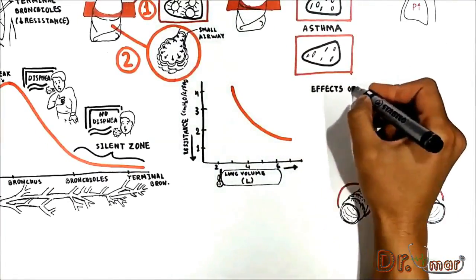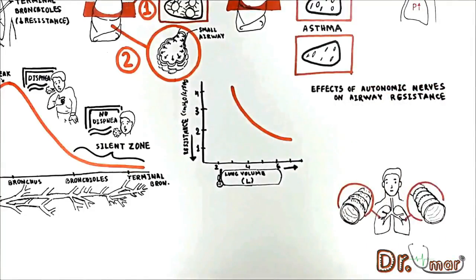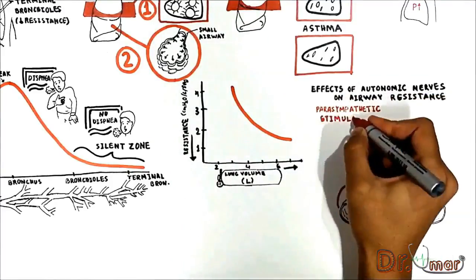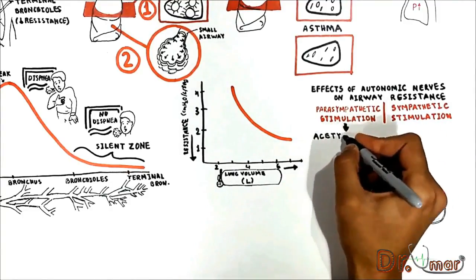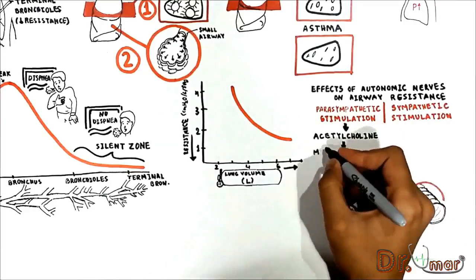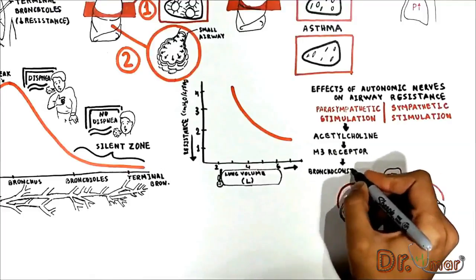Airway diameter is a function of the balance between sympathetic and parasympathetic inputs. Let's see how parasympathetic versus sympathetic stimulation affects airway resistance. A few parasympathetic nerve fibers derived from the vagus nerves penetrate the lung parenchyma. These nerves secrete acetylcholine which stimulates the M3 receptors causing bronchoconstriction.